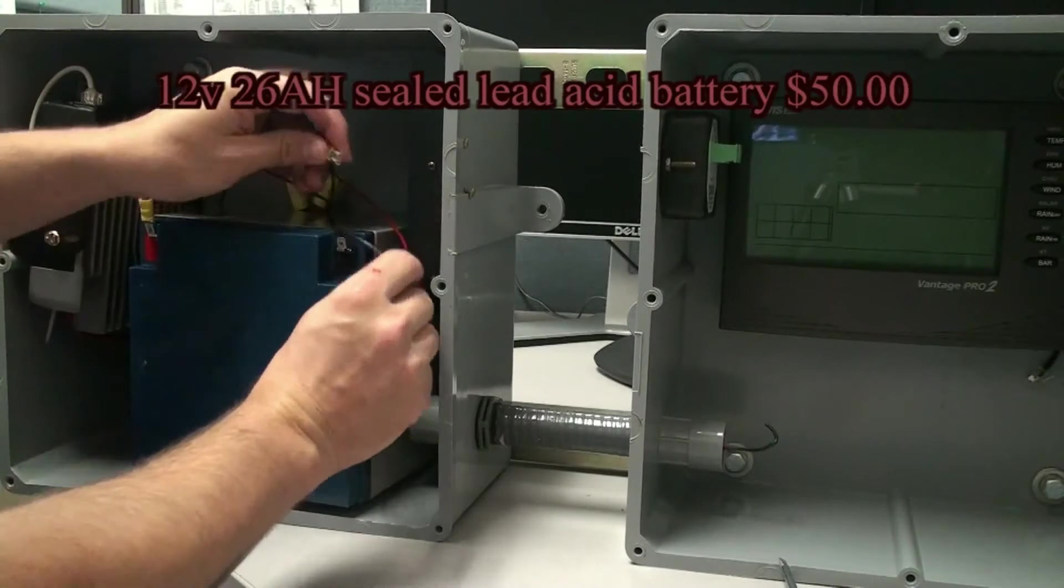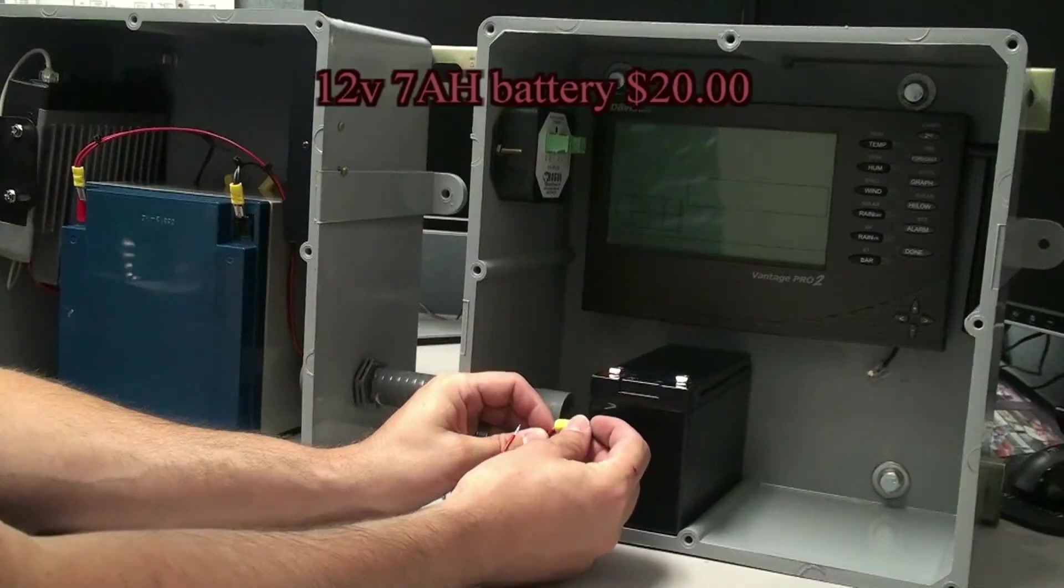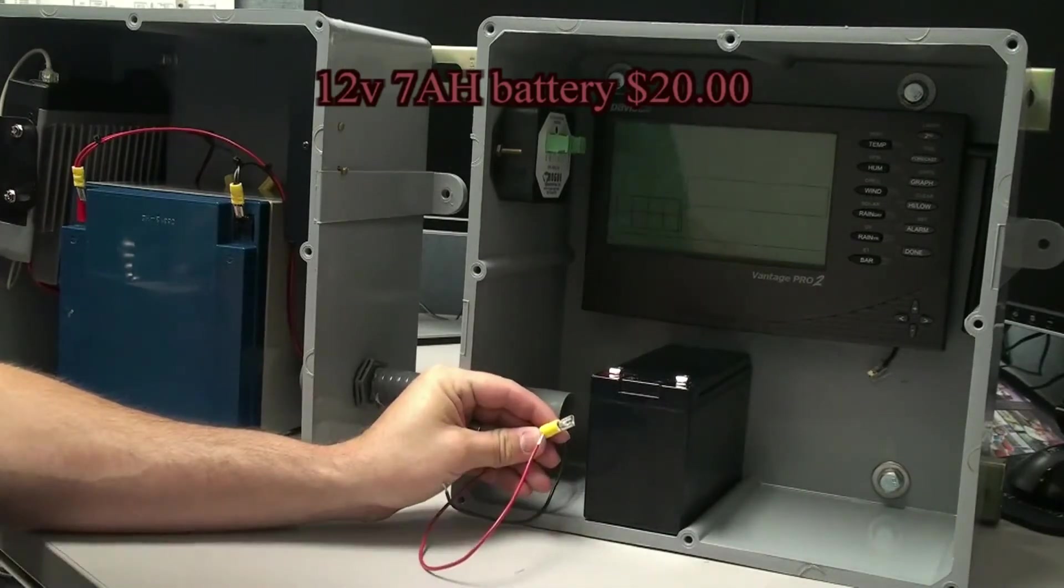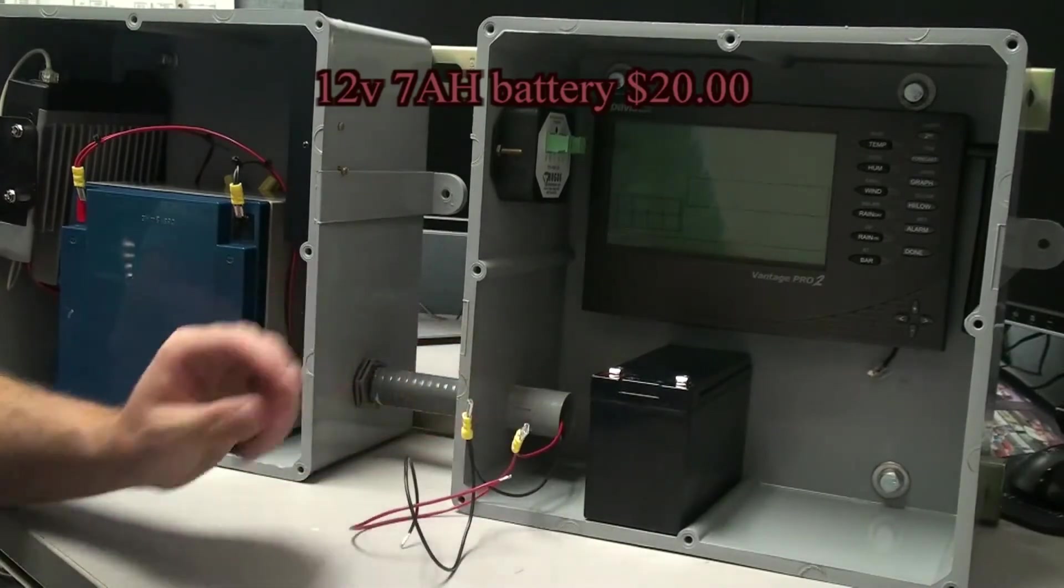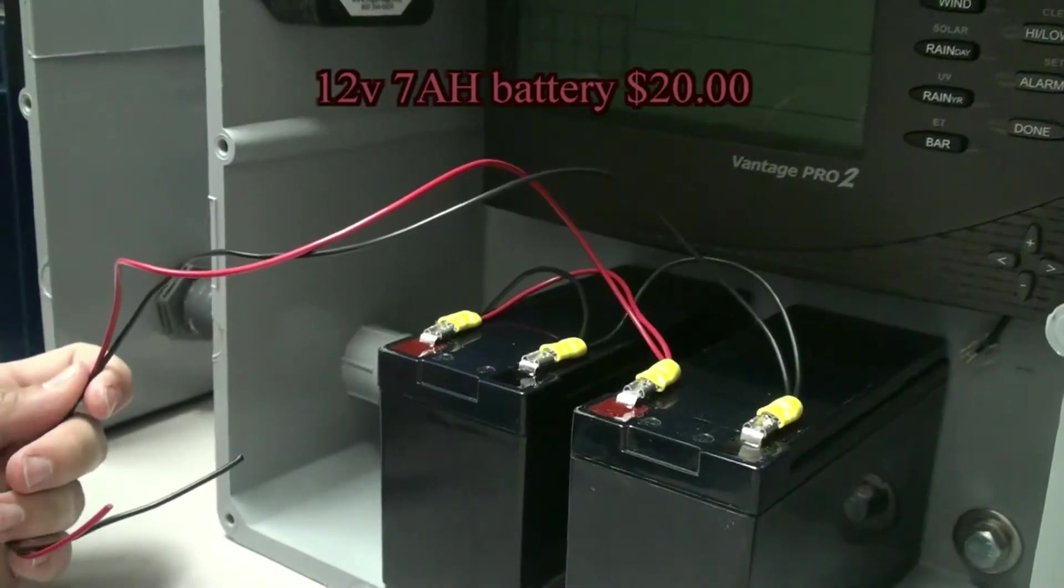This whole system uses about half an amp power draw. We have a total of 40 amp hours battery capacity giving us an operating duration of 80 hours in total darkness. Your system may be sized differently depending upon your location. Once you've added sufficient battery capacity for your system, connect the last battery to the charge controller.